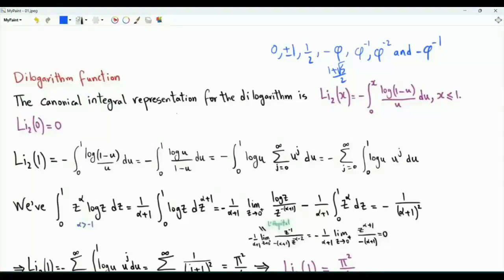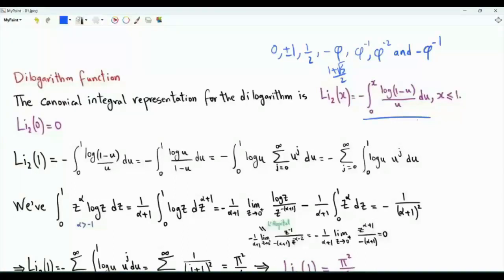The canonical integral representation for the dilogarithm is minus the integral from zero to x of log(1 minus u) over u du. If we put x equal to zero, then we get zero.